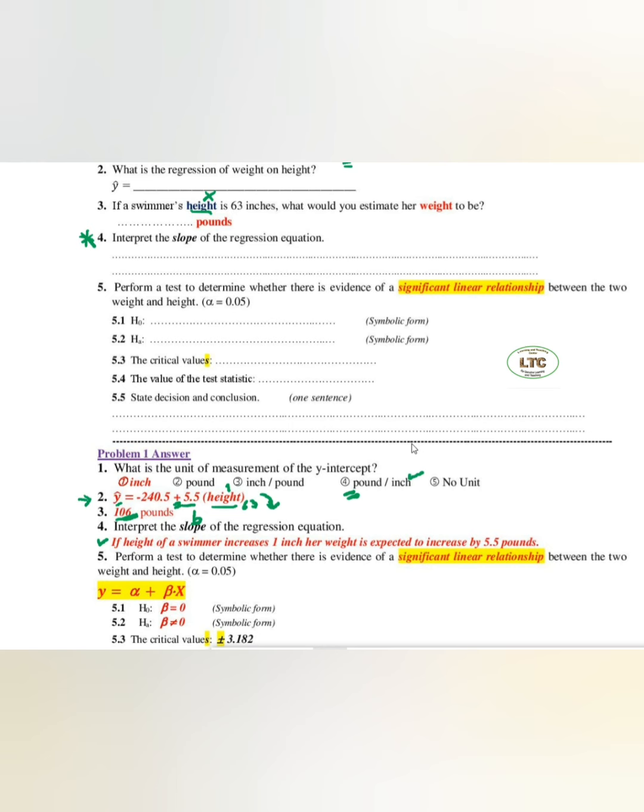What is important is testing. Perform a test to determine whether there is evidence of a significant linear relationship between the two - weight and height. We mean this equation: y hat is a plus bx, where b is 5.5. This equation is the best model to estimate weight using height for those sample data.